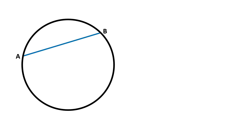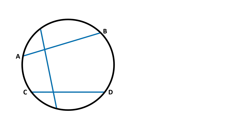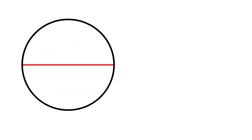In this example, line AB is a chord. Line CD is also a chord. Here is another example of a chord. Remember, a chord is a straight line that joins two points on the circle. A diameter is a chord that passes through the center of a circle.